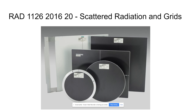In fact, grids are bad for patients because you have to increase your exposure to use one. The grid is underneath the patient, so when you jack up your exposure four times, the patient really feels that. Grids are really good at cleaning up not only good photons but bad photons — they're almost too good for their own good. To even the odds so we get more good photons that don't get killed, we have to increase the number of photons. That's why we go up four times.